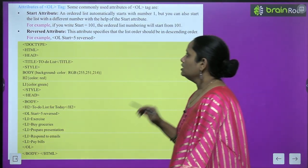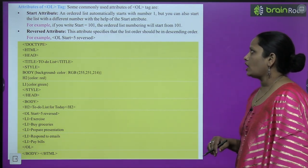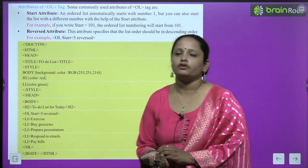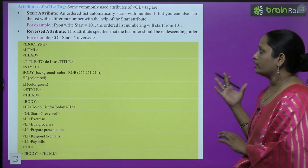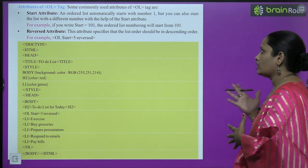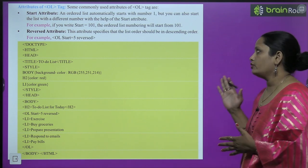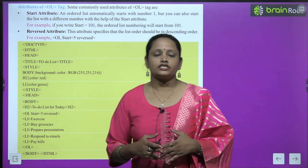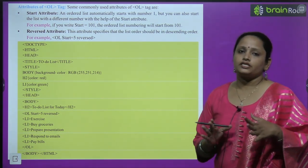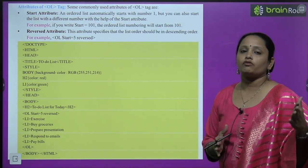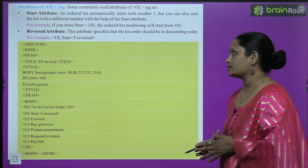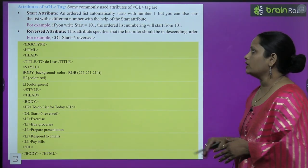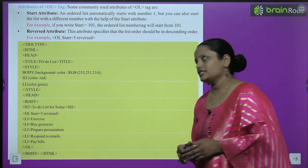What is the start attribute? The ordered list automatically starts from number 1 by default. But you can also start the list with a different number with the help of the start attribute. So whenever we open an ordered list, in the start attribute we can set any number — it's not necessary to start from 1, we can start our list from any number. For example, if you write start='101', the ordered list will start from 101.